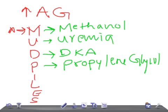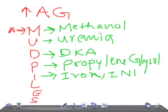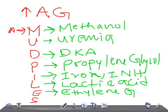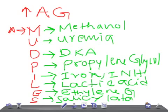I is for iron tablets or isoniazid (INH) — if the patient is taking iron tablets or INH drug. L is for lactic acidosis. E is for ethylene glycol — also associated with oxalic acid. S is for salicylates.